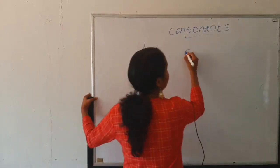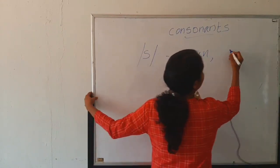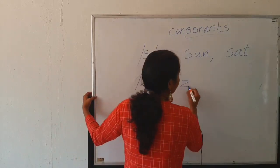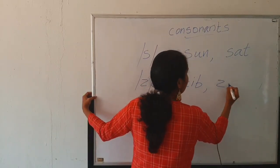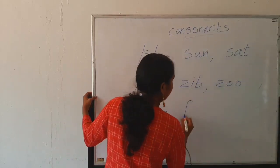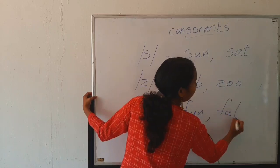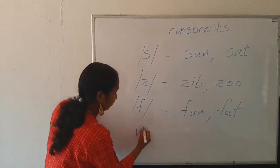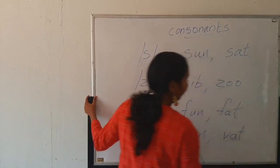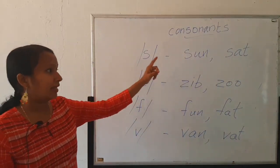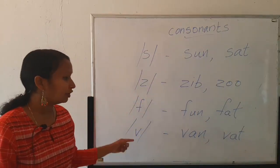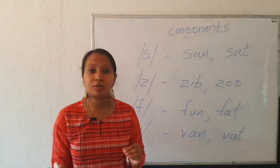S as in sun, sat. Z as in zip, zoo. F as in fun, fat. V as in van, vat. S as in sun, sat. Z as in zip, zoo. F as in fun, fat. V as in van.